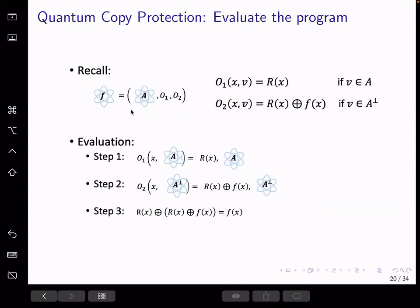To evaluate the program, the user first inputs the subspace state into oracle 1 and measures the output. And by the gentle measurement lemma, the remaining state is still good for use. Then the user applies QFT to the state and obtains the dual subspace state, inputs into the second program, and measures the output register. Then we can XOR the two output values we obtain together and this gives us F of X.